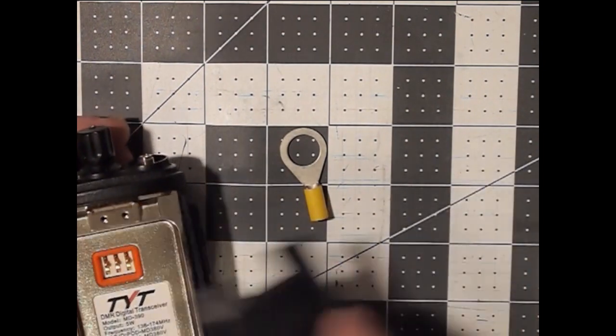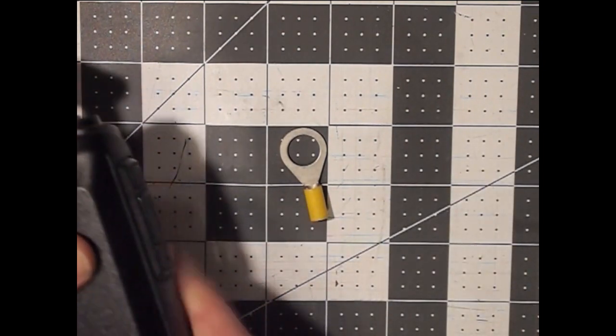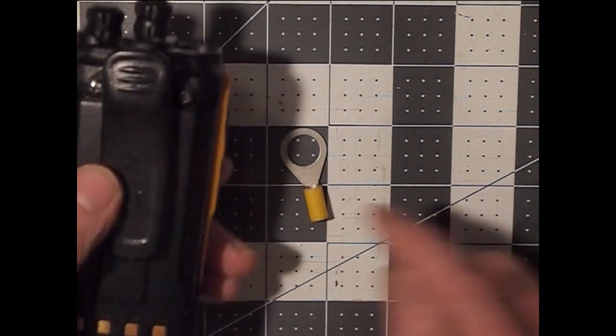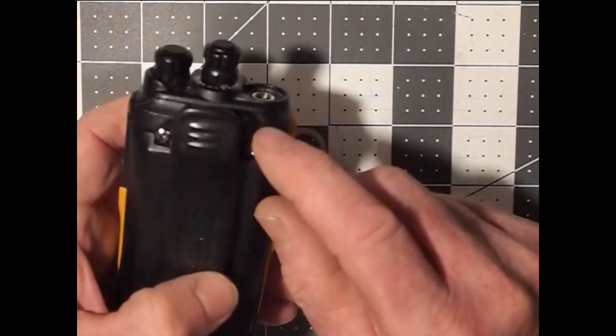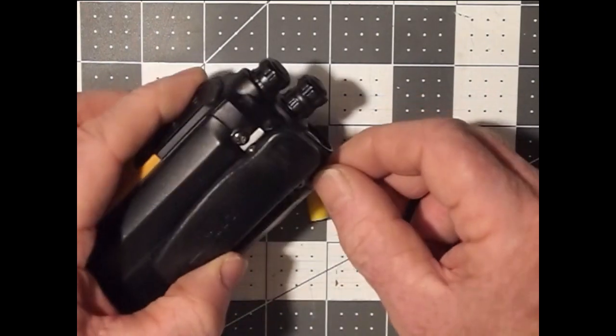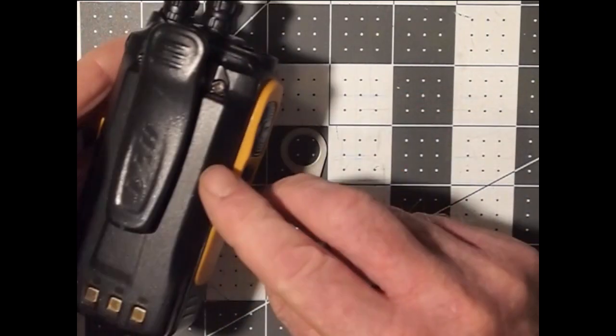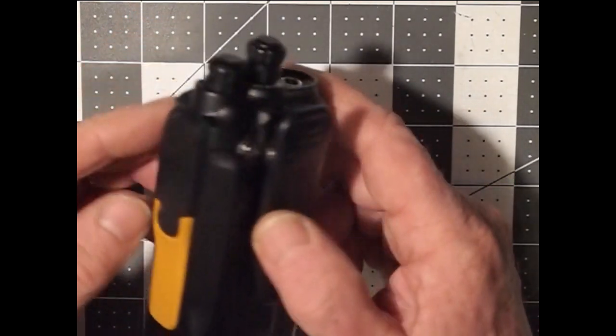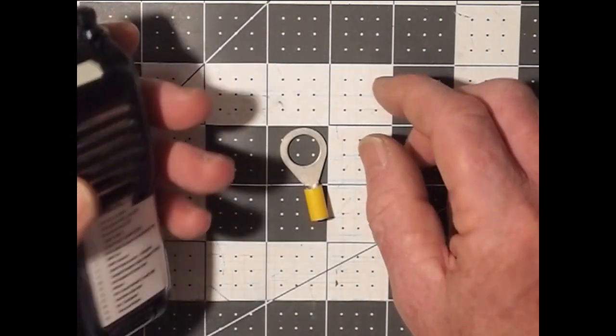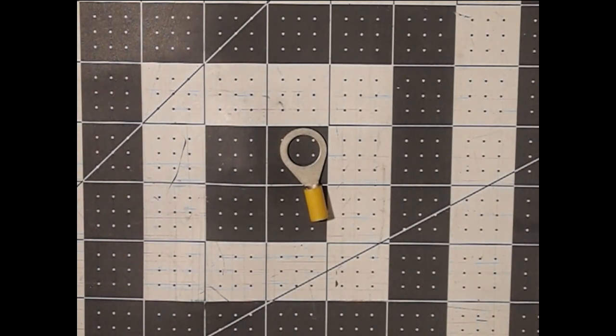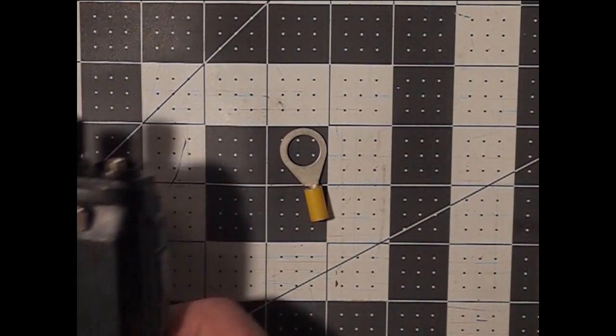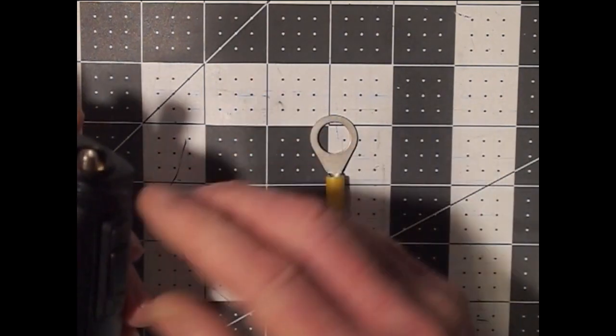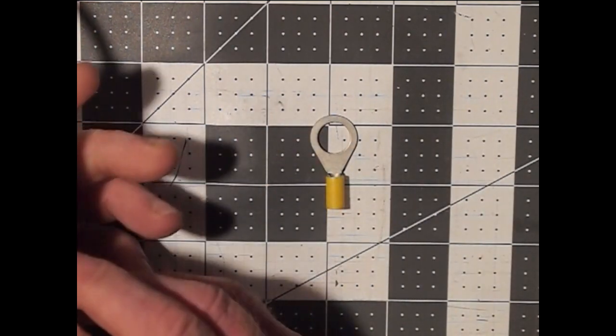You can see that on that you may get a ground plane, and you can ascertain that by checking the continuity between that and that attachment point. But other radios may have the belt clip attachment point on the battery itself and therefore not a cheap ground, and you may not have any other ground connection points as well.